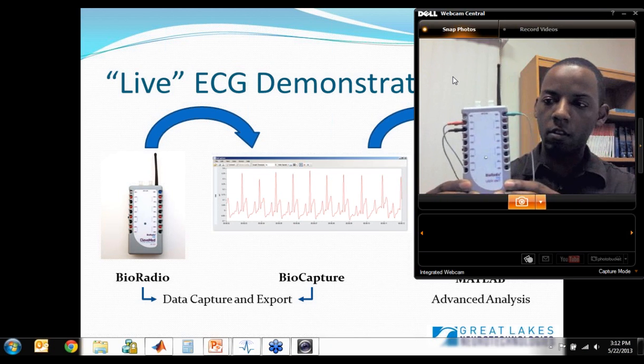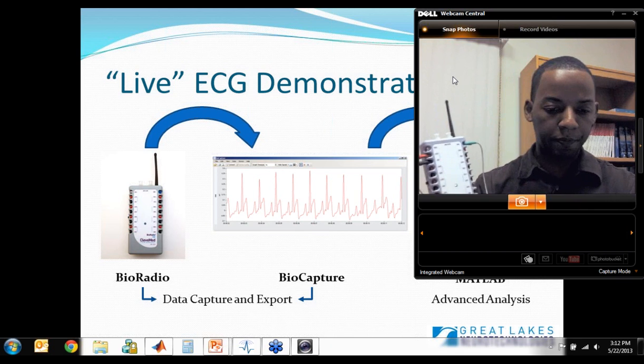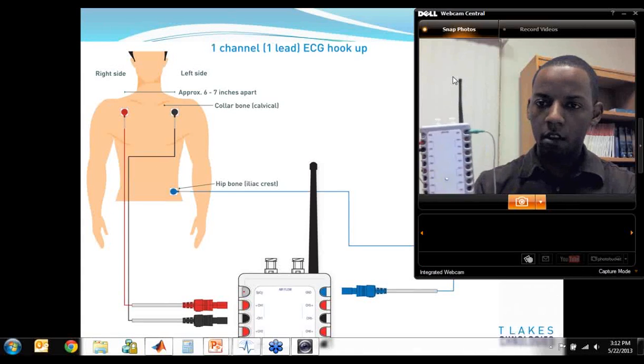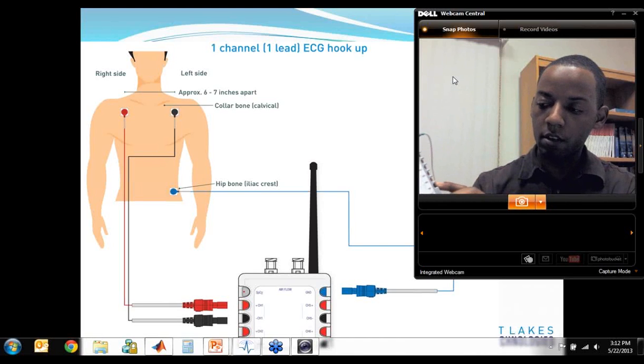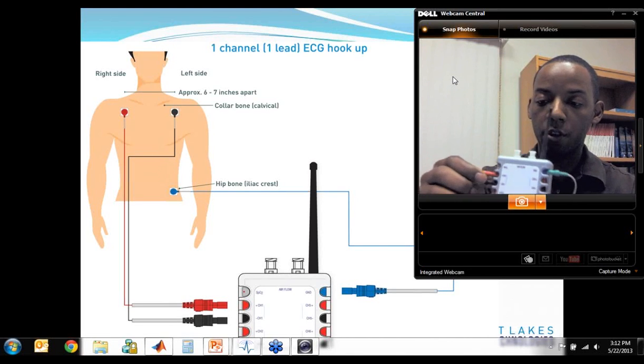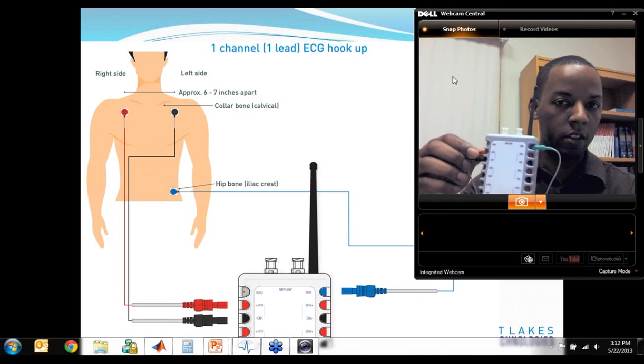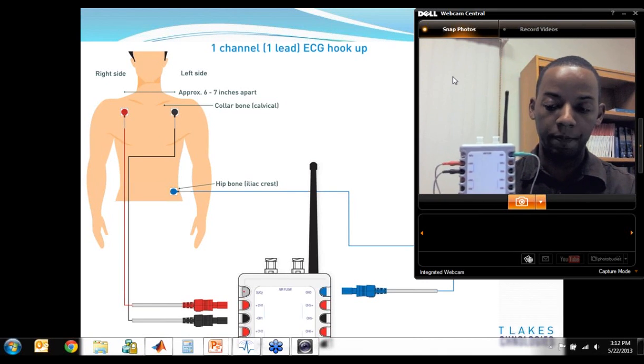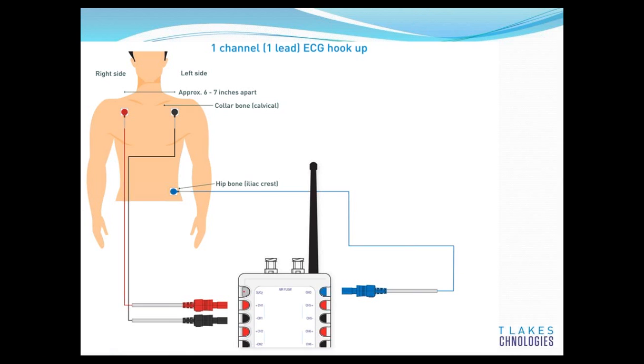So here's what the BioRadio actually looks like. As I mentioned, it has eight differential programmable channels. For this demo, I'm going to use channel one to do a one-lead ECG, like as shown on the diagram on the slide. So under my shirt, I have two leads with snap connectors connected to the right and left side of my chest, and then I have a ground electrode connected to my hip bone.